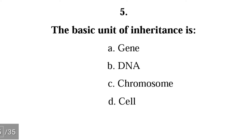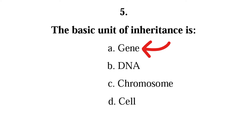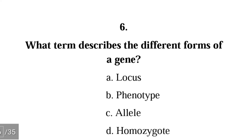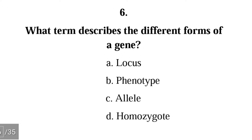Number five: the basic unit of inheritance is — gene, DNA, chromosome, or cell. The correct answer is A, the gene. The gene is the basic unit of inheritance and is responsible for the transfer of characteristics or traits from parents to offspring.